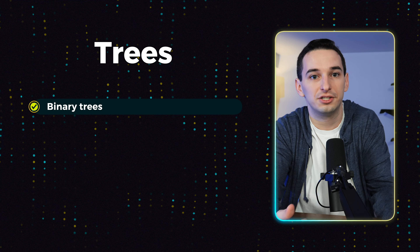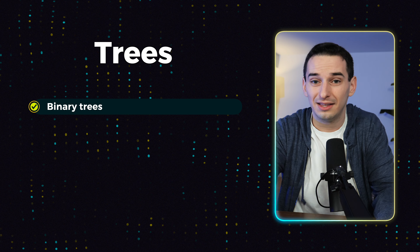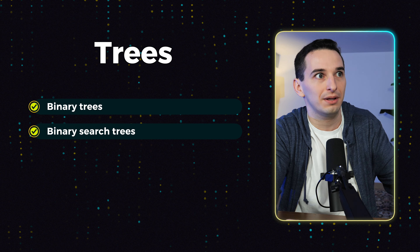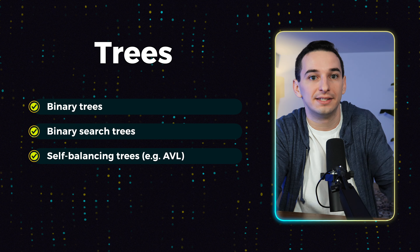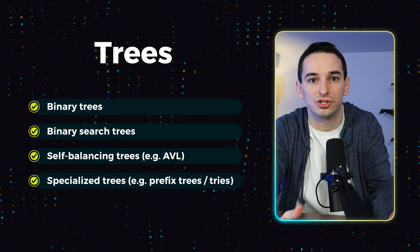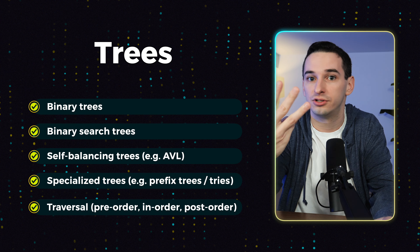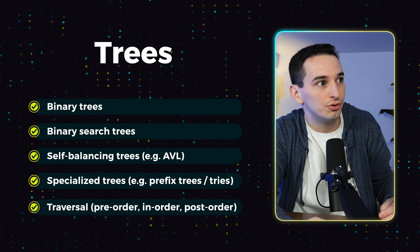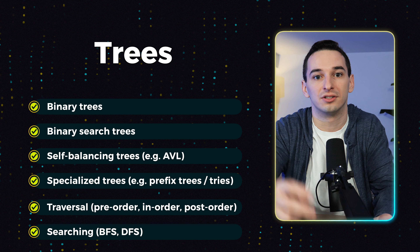For trees, there's a ton of different variants, but the most important is going to be binary trees — simply a tree where nodes can't have more than two children. Within binary trees, there's also binary search trees, which are binary trees that are in a sorted order. Another category to look at is self-balancing trees such as an AVL tree, or more specialized trees such as a prefix tree. As far as algorithms are concerned, the most important thing is to learn how to traverse the tree in three ways — pre-order, in-order, and post-order traversals — as well as how to search using breadth-first search and depth-first search.